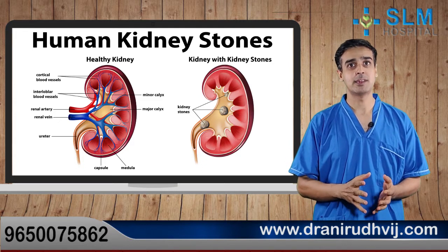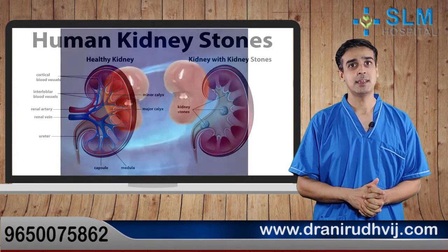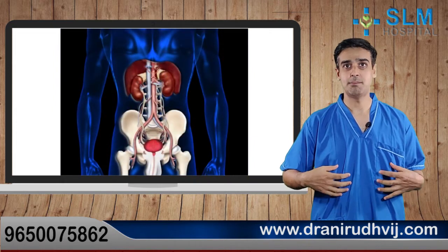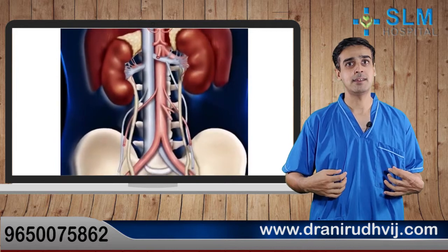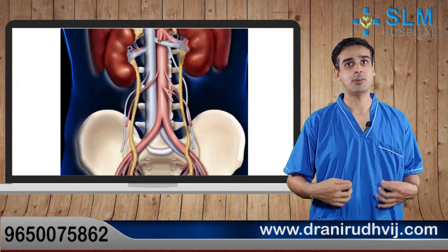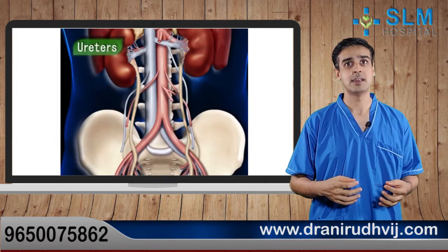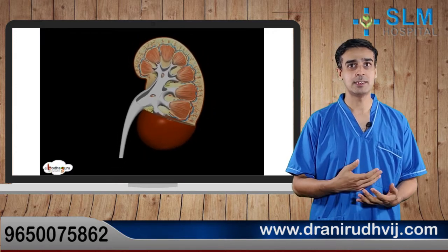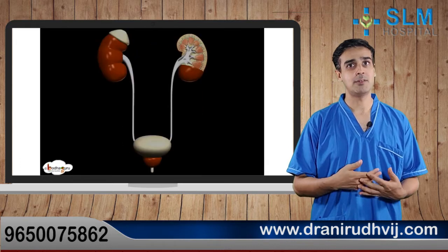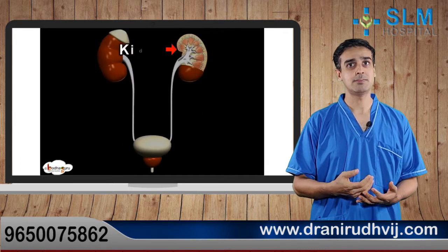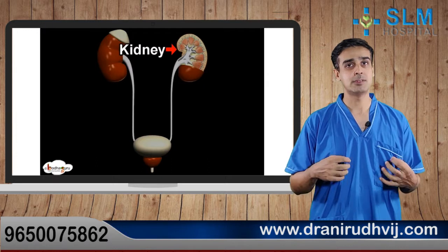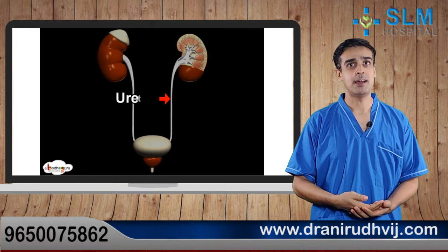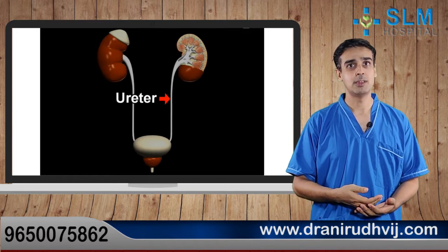The kidneys are paired organs which are present inside our abdominal cavity on either side of the lumbar spine, and they are connected by means of narrow tubes known as ureters to the urinary bladder. The kidneys function for filtration of the blood and production of urine. The urine produced flows down the ureters into the urinary bladder where it is stored for some time before being voided out through the urethra.